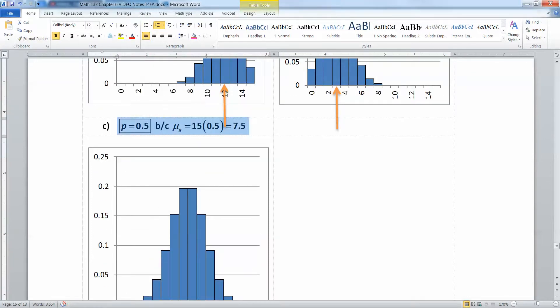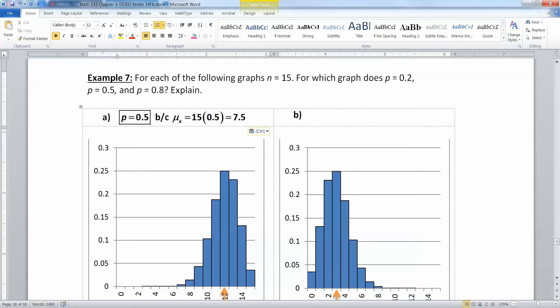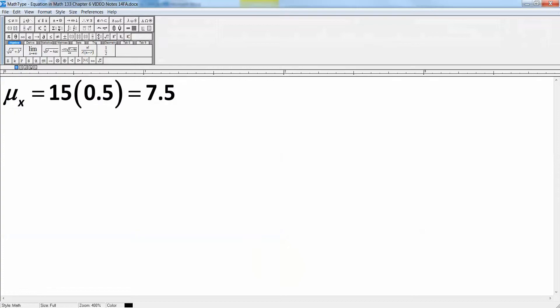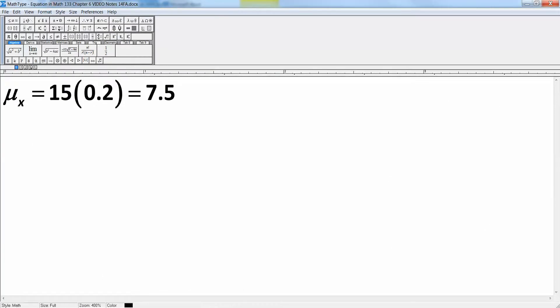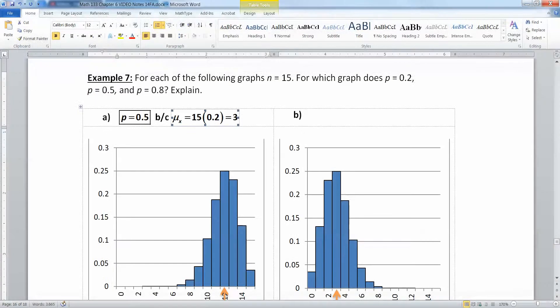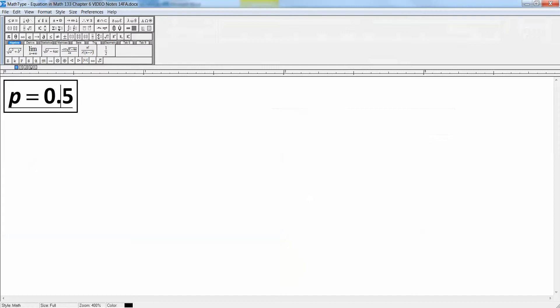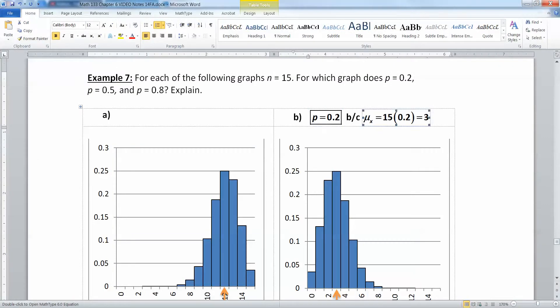Now we get to the two hard ones. So if we had a mean of n is 15, if we have 0.2, let's see what number that would be. So 15 times 0.2 would be a mean of 3. That would mean that your balance points on the low end. Well that's not this one. That is this one over here, right? So this one has to be 0.2 because that'll have a mean that's a low number.